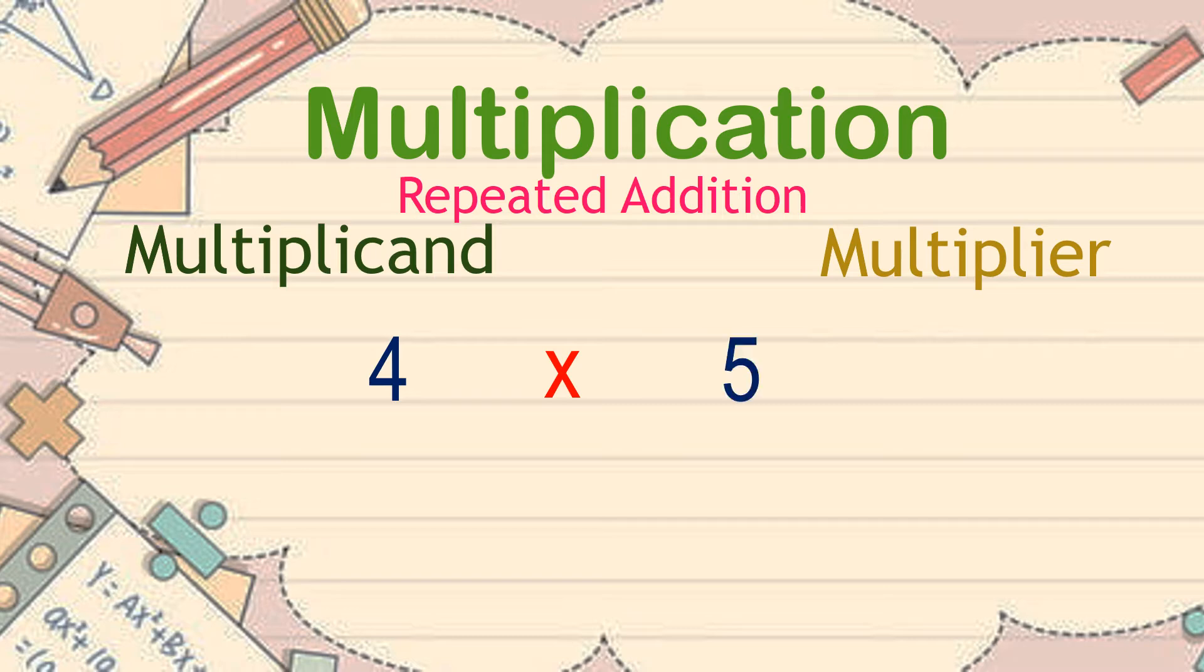4 times 5. 4, as the multiplicand, is simply telling us the number of times we should use 5. In this case, 5 is added 4 times, which is equal to 20.